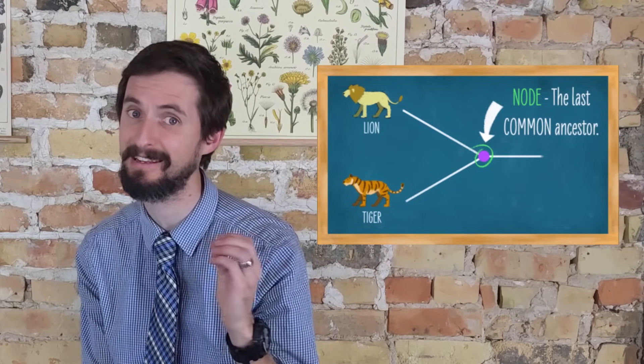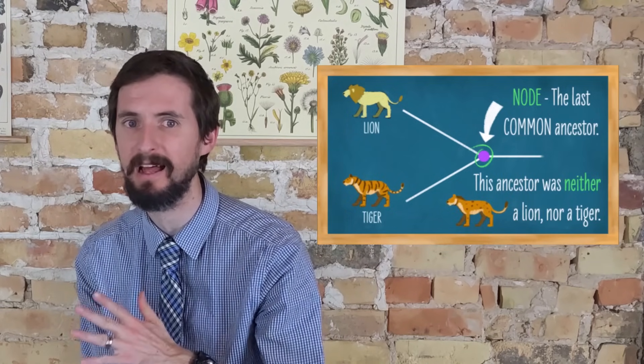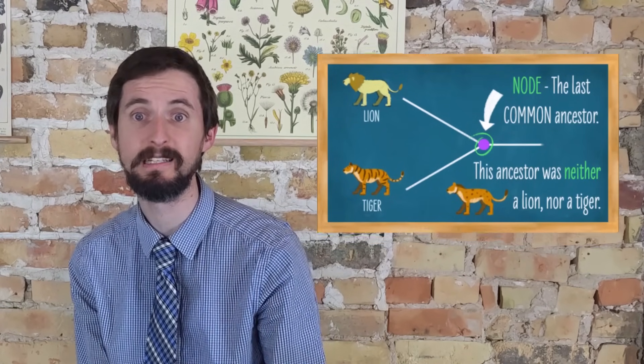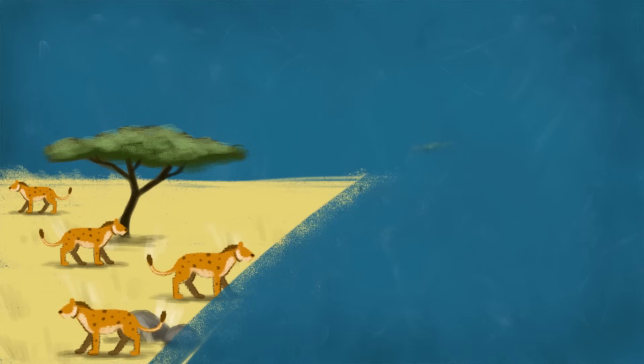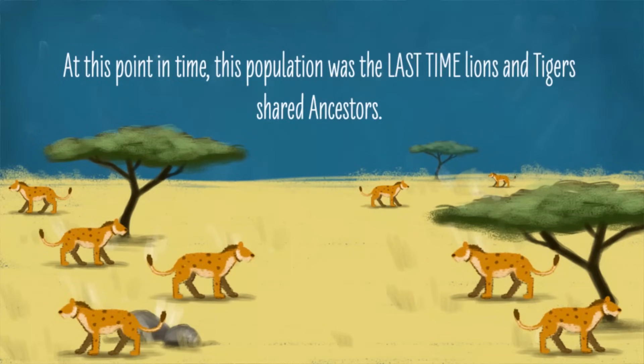To be clear, this likely wasn't a lion or a tiger. It also wasn't a single animal or a pair of animals, but a population whose descendants include both lions and tigers. This population, at this point in time, was the last time that lions and tigers shared common ancestors before their two lineages went their separate ways.